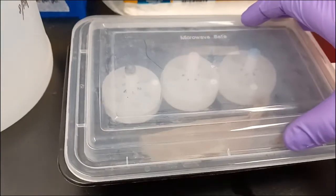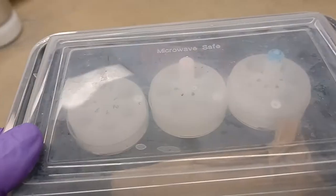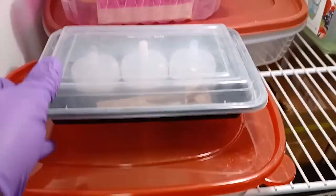Now, add the storage container lid on and then press it on to seal it. Then, carefully move this storage container to an even surface in the fridge, making sure not to tilt the container while you are transporting it.